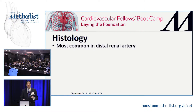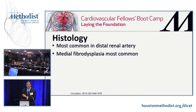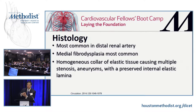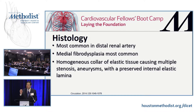What makes FMD really interesting is the histology. In the distal renal artery, the most common type — important for testing — is medial fibrodysplasia. Typically, there's a focal collar of thickened elastic tissue causing multiple stenoses. Between each stenosis, like putting a finger over a hose, you get high-velocity flow and sometimes aneurysm formation, creating the characteristic 'string of beads' appearance.